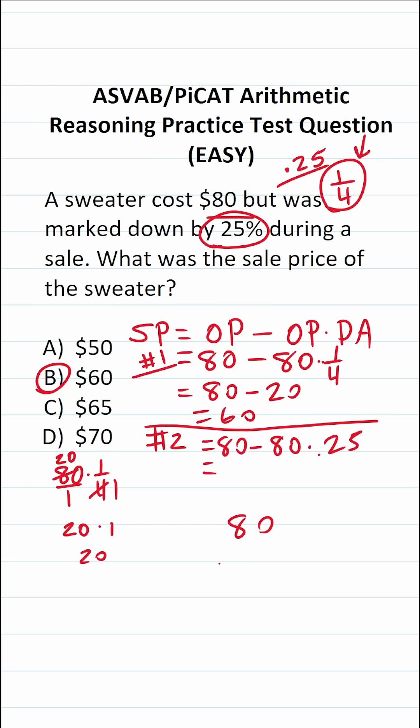This is 80 times 0.25. You have to move this decimal two times to the right to make this 80 times 25, albeit with two decimals to move to the left when you're done. 0 times 5 is 0. 8 times 5 is 40.